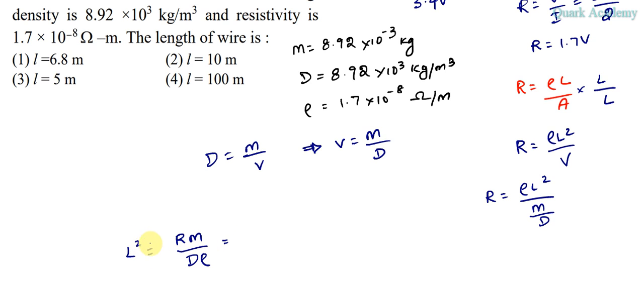So L² = Rm/(ρD). We know all the parameters. Let's substitute: R is 1.7, m is 8.92 × 10⁻³, D is 8.92 × 10³, and ρ is 1.7 × 10⁻⁸.